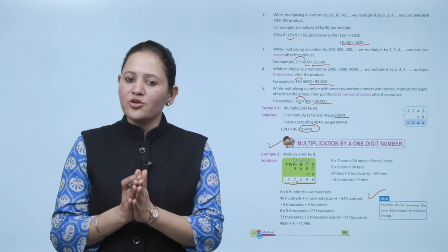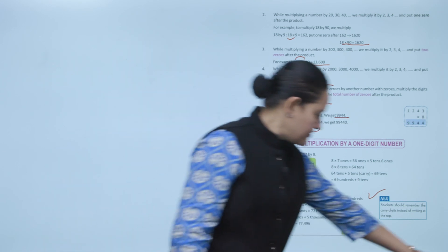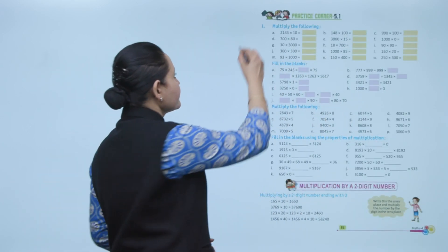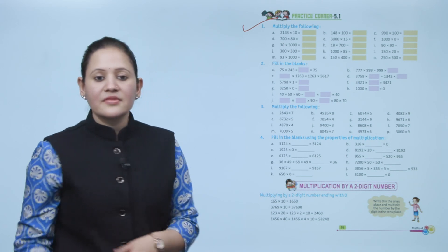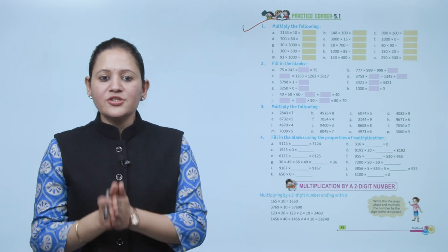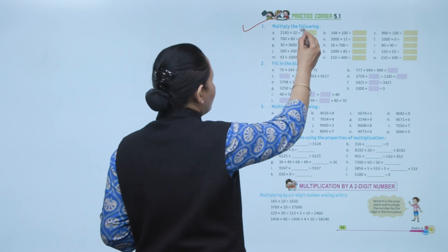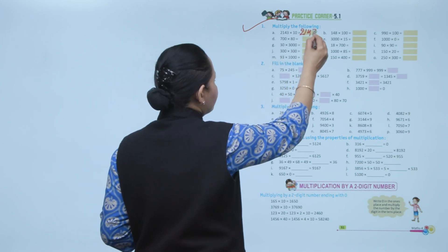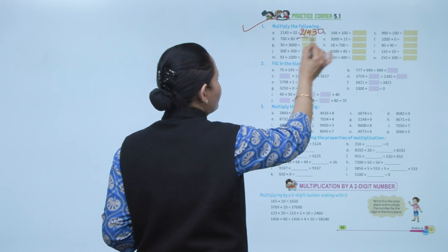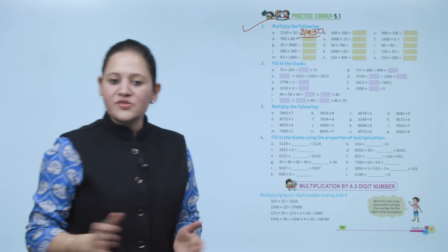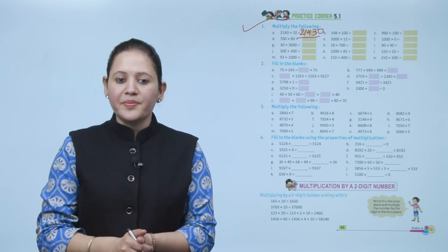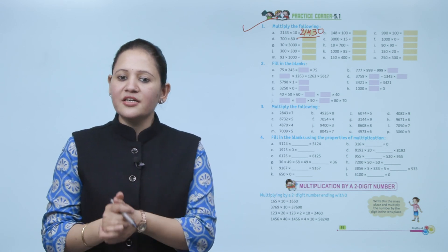Next is practice corner 5.1. Multiply the following: 2143 into 10. Since there is one zero, put one zero after the number, so the answer is 21,430. Practice all the questions of this exercise, then move to the next topic.